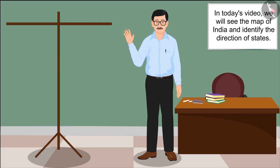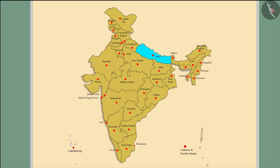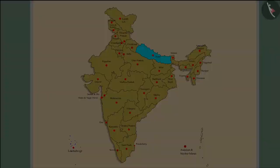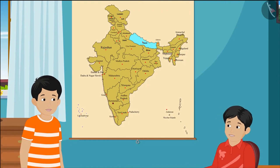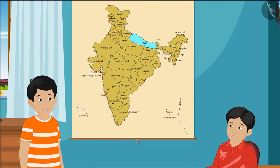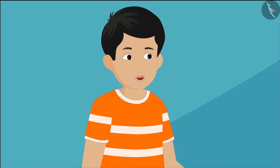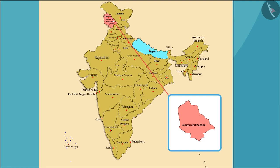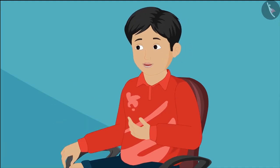In today's video we will see the map of India and identify the direction of states. Here are Raju and Govind, who hail from Madhya Pradesh. Both of them are very excited about their school holidays. During the holidays, Raju says he is going to Jammu and Kashmir with his parents.